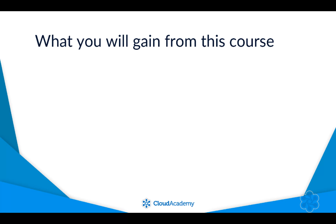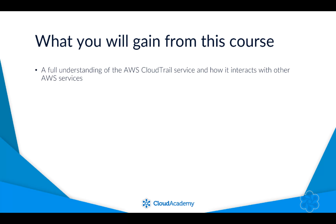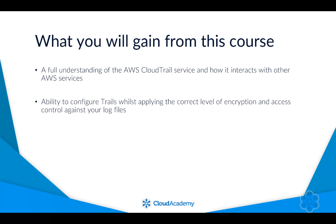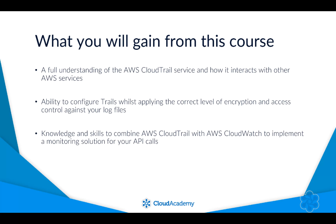As a student of this course, you will have a full understanding of the AWS CloudTrail service and how it interacts with other AWS services, allowing you to implement CloudTrail effectively, ensuring it fulfills your business requirements. You will have the knowledge to confidently configure trails for your AWS account, whilst at the same time applying the correct level of encryption and access control against your sensitive log files. In addition to this, you will be able to combine CloudTrail with CloudWatch to implement a monitoring solution for your API calls if required.